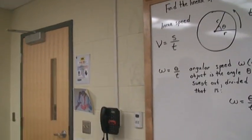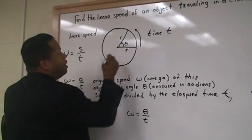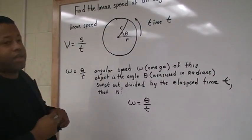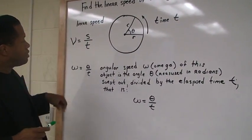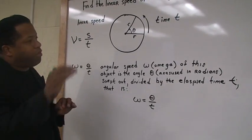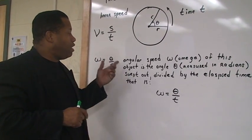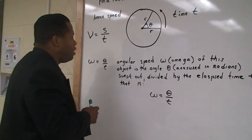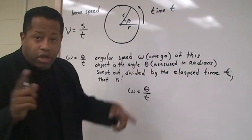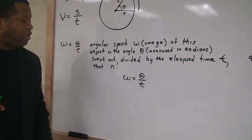However, let's look at some formulas here. Linear speed, we have a circle here, a simulation of maybe something in the middle here or a person swinging something around at time t. So v is equal to s divided by t. And now when we look at this, this is going to somehow, some way, break off or simplify itself into another formula in which the angular speed is going to be given. The angular speed omega of this object is the angle theta measured in radians swept out divided by the elapsed time t. That is, omega is equal to theta divided by t.